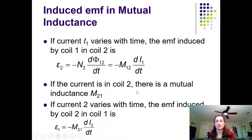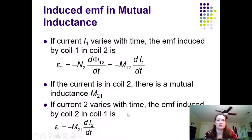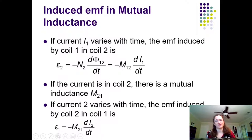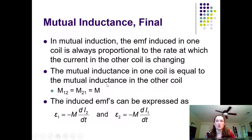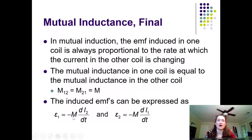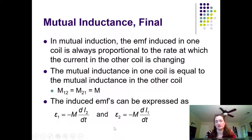If there's a current in coil two, then there's a mutual inductance M2,1 — it goes both ways. If current two varies with time, then the EMF induced by coil two in coil one is EMF1 = minus M2,1 times dI2/dt. Not only does it go both ways, but M1,2 equals M2,1, and you can just call it M. The induced EMFs are: EMF1 = minus M times dI2/dt, and EMF2 = minus M times dI1/dt. In mutual induction, the EMF induced in one coil is always proportional to the rate at which the current in the other coil is changing.